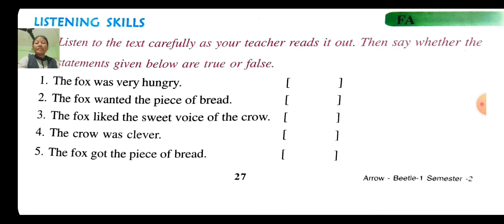Fifth number: the fox got the piece of bread. Is it true or false? The fox got the piece of bread — it is true. How did the fox get a piece of bread?